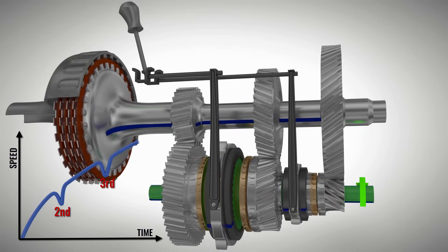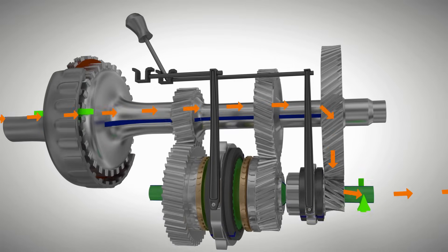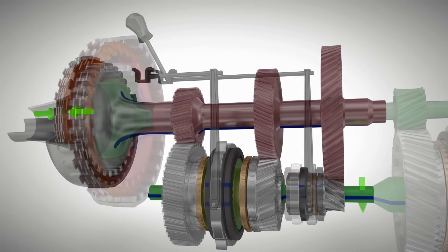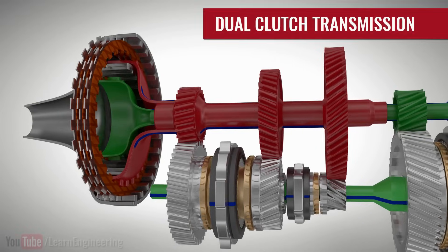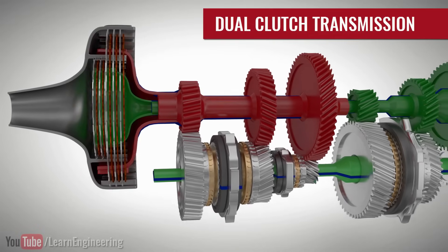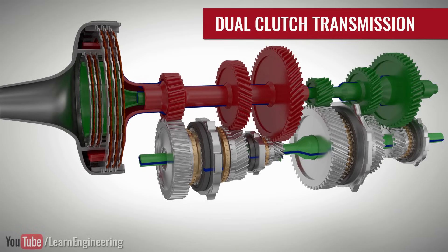One clever way to overcome this power shortage problem is to add one more manual transmission set with a separate clutch. You can see how the two sets are connected to the input via clutch packs.